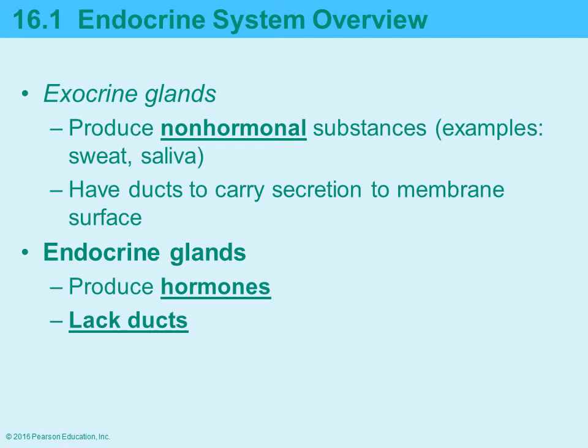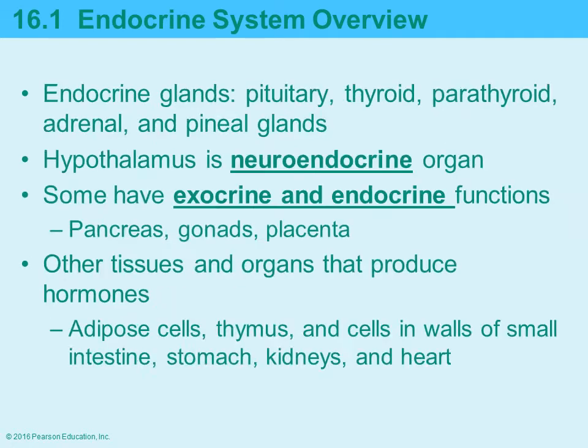Endocrine glands produce hormones and are ductless, so hormones are secreted directly from the gland and are then transported via the blood to the target cells.